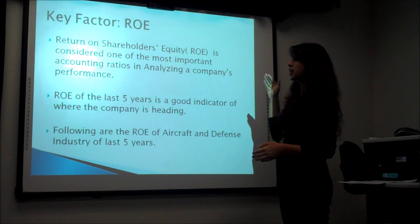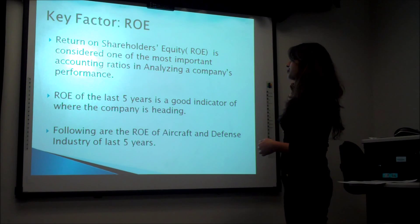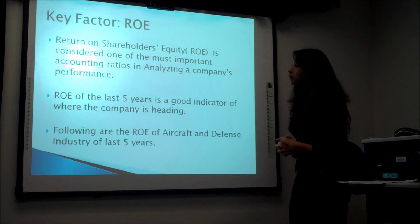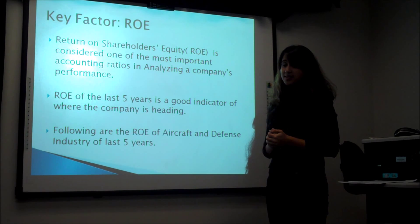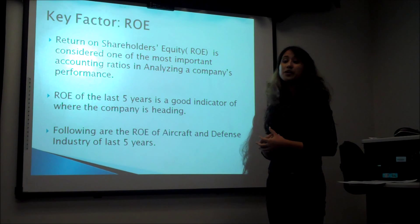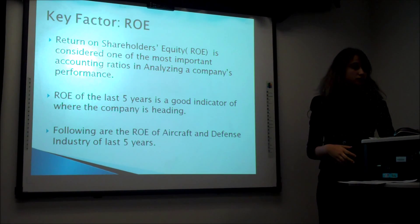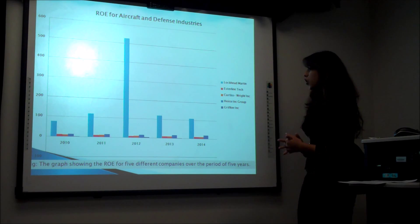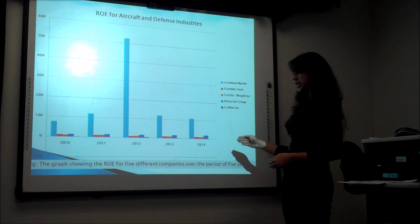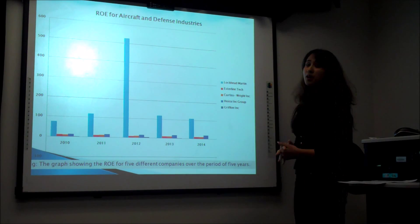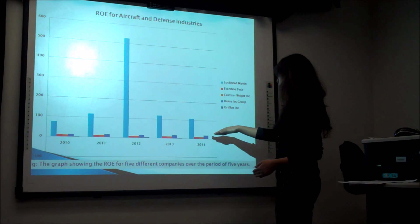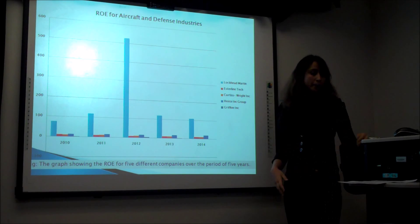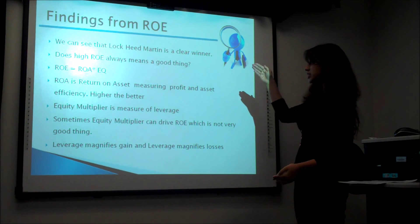The key factor is return on equity. Return on equity is considered one of the most important accounting ratios in analyzing a company's performance. Therefore, we are going to analyze five different companies' ROE over the period of five years. The graph shows the ROE of each of the five different companies from 2010 to 2014. We can see that at all times the ROE of Lockheed Martin has been the highest, followed by Griffon Inc., while Curtis Wright and Easterline Tech are about the same, making Lockheed Martin a clear winner.